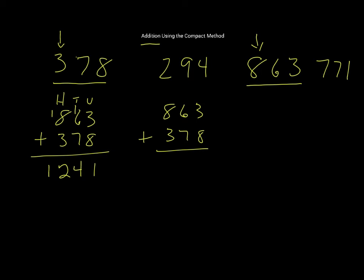I take 3 and 8, that's 11, and I write 11 here. Now I take 70 and 60, that's 130, I write 130 here. I now take 300 and 800, and that's going to be 1100.